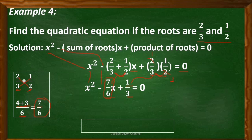Alternatively, using the LCD method: 6 divided by 3 is 2, times 2 is 4; 6 divided by 2 is 3, times 1 is 3; 4 plus 3 equals 7 over 6 — the same answer. Both methods give the same result, but I suggest you use the shorter cross-multiplication method.